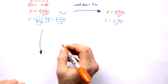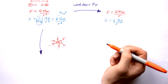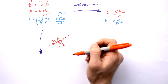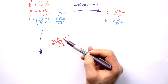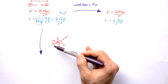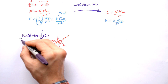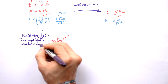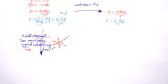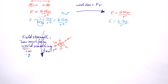What about if I just want to know how strong the field is at any given point near a planet? I'm only dealing with one mass — the mass that is producing the field to begin with — so I'm effectively taking the second mass out of the equation. Field strength is how much force would something feel. So I'm dividing by one of the masses for gravitational field strength, and dividing by one of the charges for electric field strength. That gives me these equations.